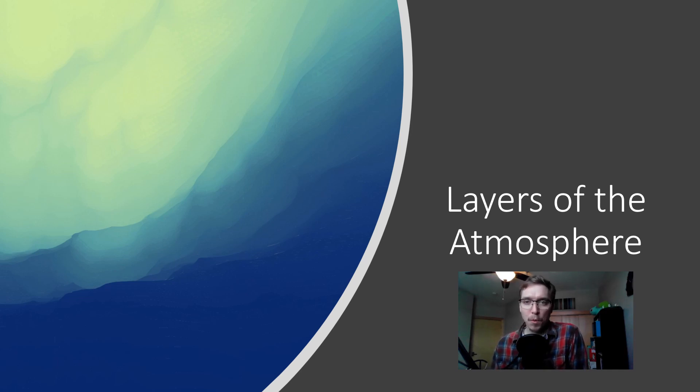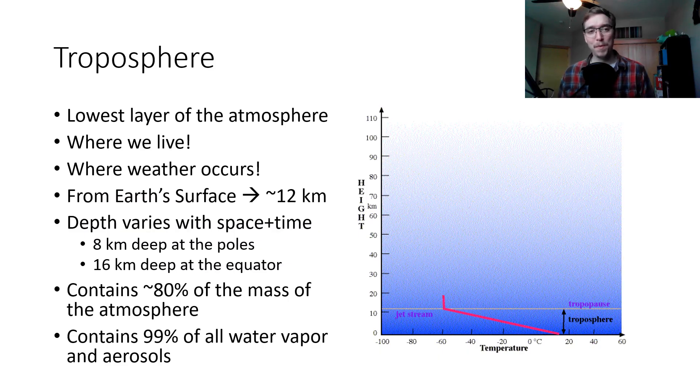Looking at the layers of the atmosphere, we're going to notice a few things. We've got four that we're going to focus on here. The first one is probably the most important to us. It's where we live. It's the troposphere. The troposphere is the lowest layer of the atmosphere. It's where we live, where basically all weather occurs. It goes from Earth's surface to roughly 12 kilometers in altitude. Depth varies with space and time. It can be 8 kilometers deep at the poles, 16 kilometers deep at the equator, so you typically see this bulging around the equator. The depth of the troposphere contains 80 percent of the mass of the atmosphere.